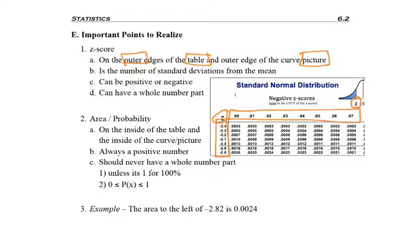At the edge of the picture, not the shaded in part, that is a z-score. It tells you the number of standard deviations away from the mean. Notice that it can be positive or negative. You can see those tiny little negative numbers, and it's also possible to have a whole number part.